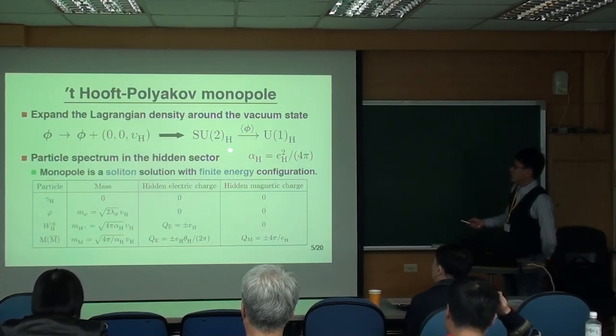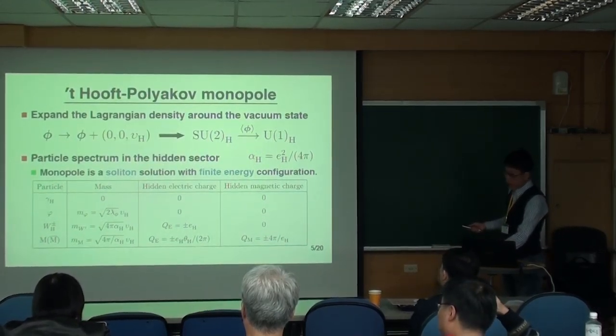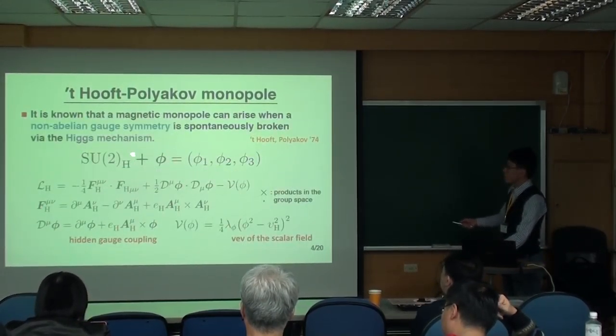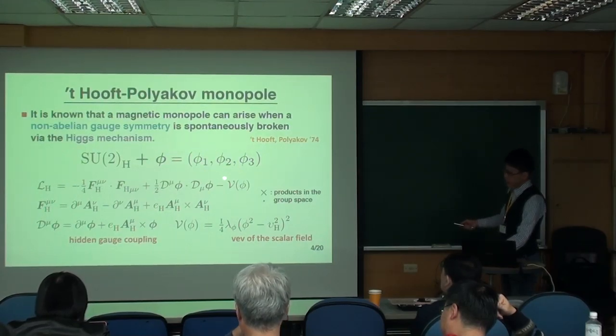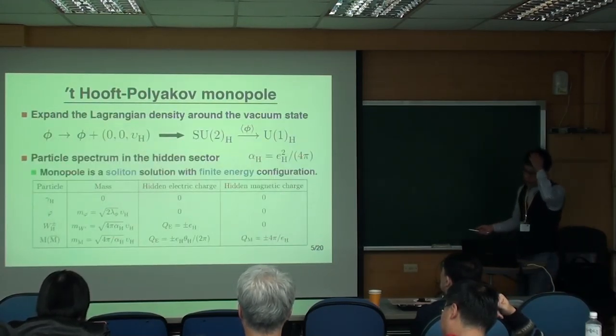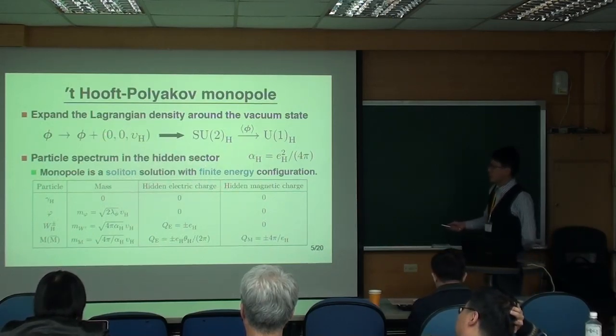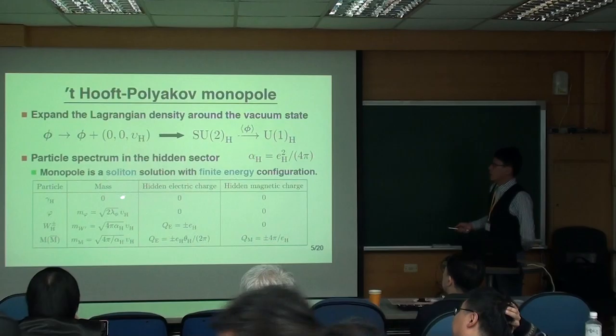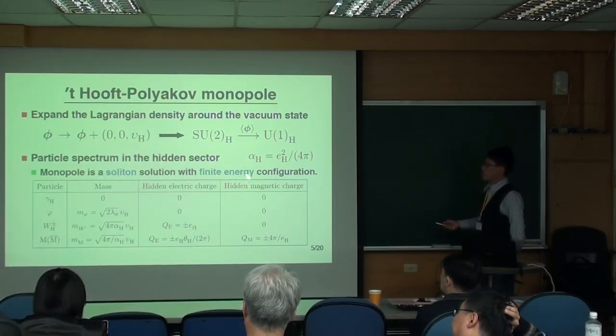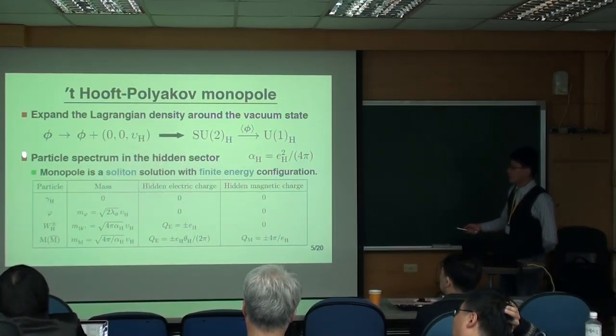As usual, you can expand this scalar field around the VEV. We choose the third component that develops the vacuum expectation value. Then this SU(2) gauge symmetry breaks down to U(1) gauge symmetry. And especially because we introduced this isovector scalar, under this finite energy configuration, this model is allowed to have soliton solutions which are identified with the monopole.